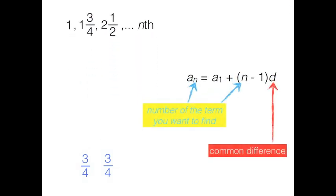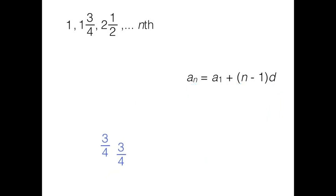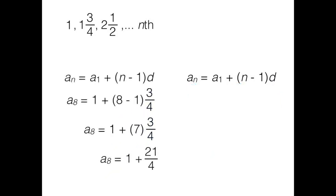So in a of n, the n refers to the number of the term you want to find, and the d refers to the common difference. So two things you need to know, what term you want to find and the common difference. So here I've plugged in the numbers where they go.